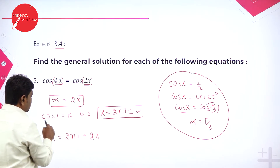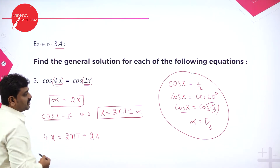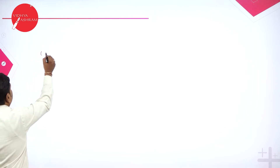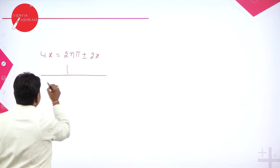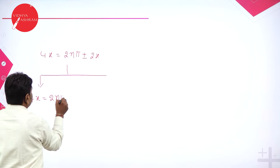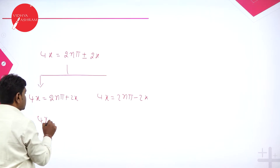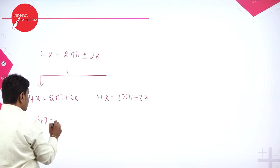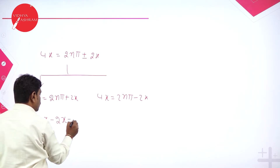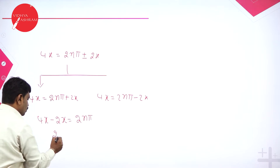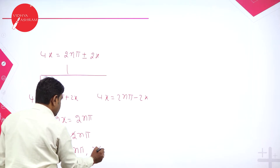The general solution: for cos x equal to k, the general solution is x equals 2n pi plus or minus alpha. But in the place of x we have 4x, so 4x equals 2n pi plus or minus alpha, which gives 4x equals 2n pi plus or minus 2x. We split this into two: the first is 4x equals 2n pi plus 2x, giving 4x minus 2x equals 2n pi, so 2x equals 2n pi, and x equals n pi. Where n belongs to integers.